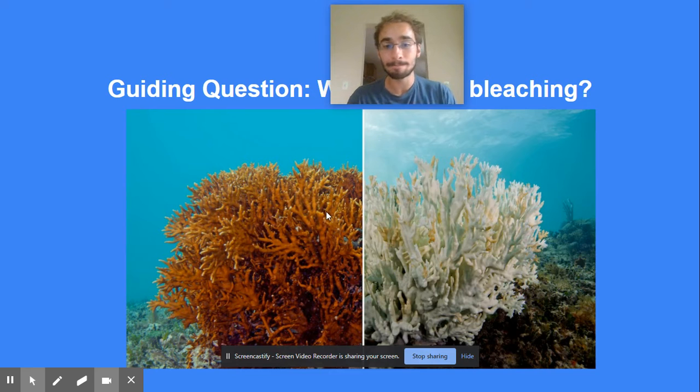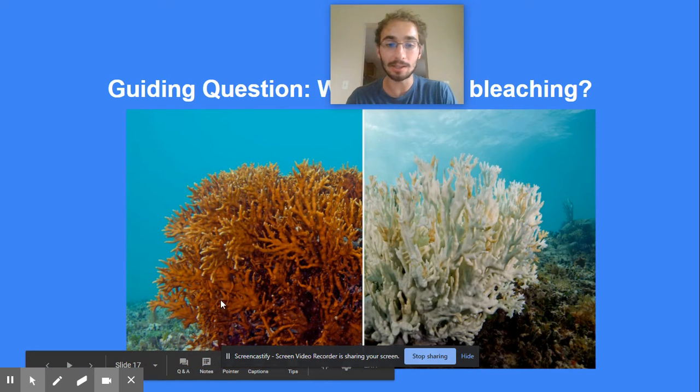It looks a lot like this. So coral has algae on it, and that's what gives it color. And then this is dead coral because it doesn't have algae, so it starves.